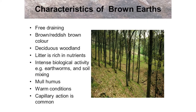Brown earths have a mull humus — a porous, crumbly humus which rapidly decomposes and quickly becomes well mixed into the mineral soil, so that distinct layers, or horizons, are not apparent. Bacteria, earthworms and larger insects are abundant in brown earth soils.